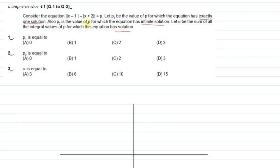It is called a modulus equation, and we can solve it with a graph. The graph of |x - 1| - |x + 2| has critical points at x = -2 and x = 1. The value here is -3. On the left region, both terms open with a plus sign, giving a value of -3.